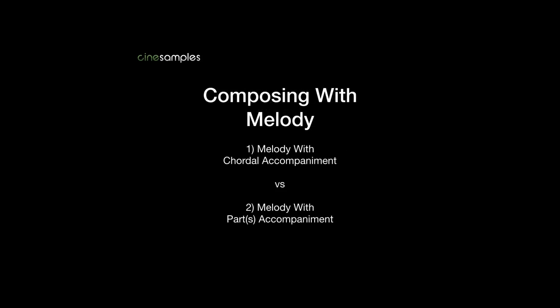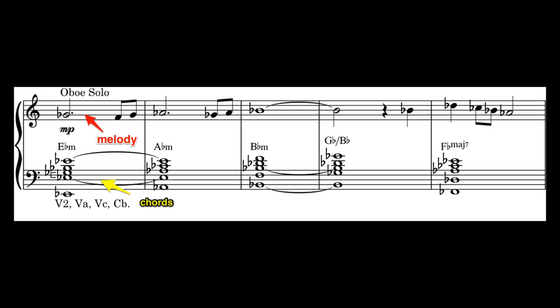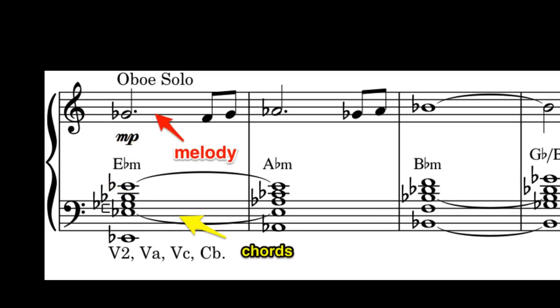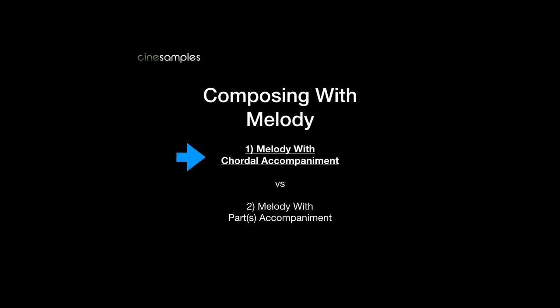Melody with chordal accompaniment is just as it sounds: some type of featured musical line being supported by some static harmony — clear, simple, and effective. The fixed nature of the accompaniment attracts the ear to the moving melodic line. It is often the perfect recipe for film scoring. Let's listen to some great examples of this type of writing.